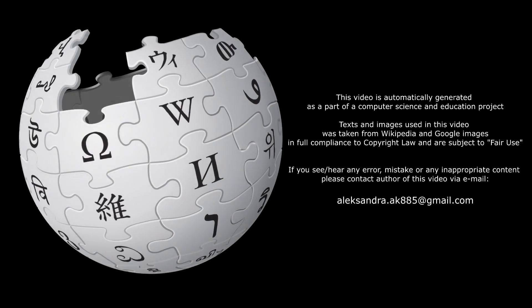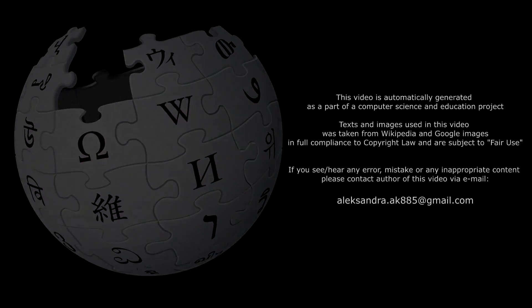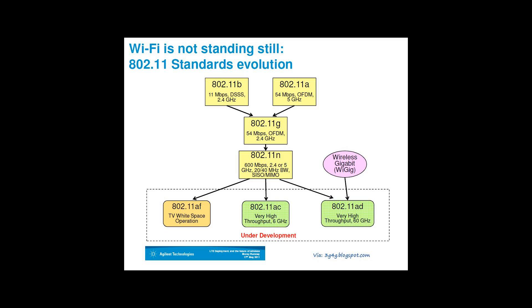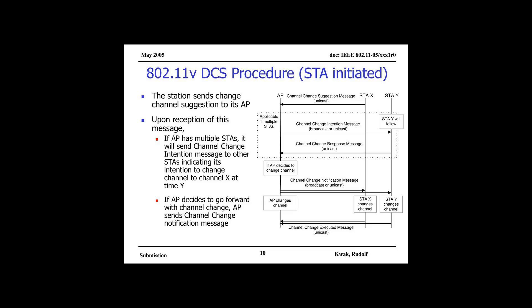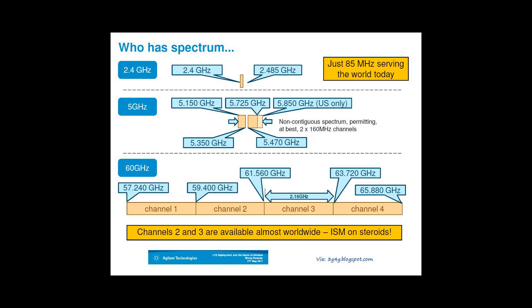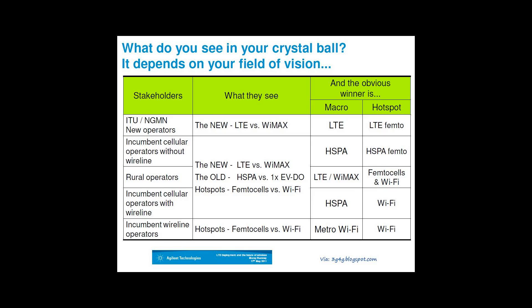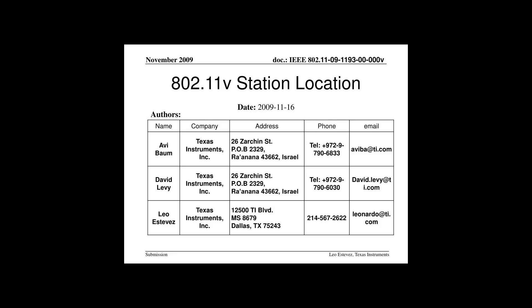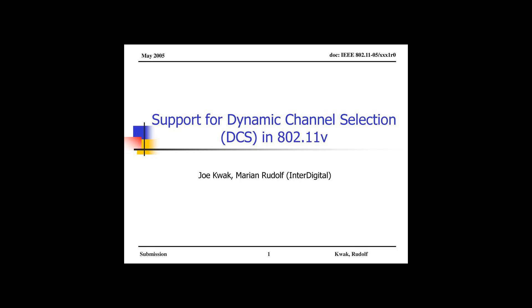IEEE 802.11v is an amendment to the IEEE 802.11 standard to allow configuration of client devices while connected to wireless networks. It was published as 802.11v-2011 and later incorporated into 802.11-2012.